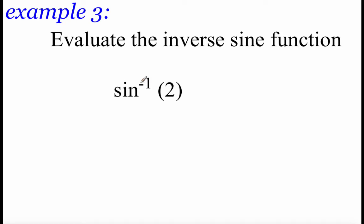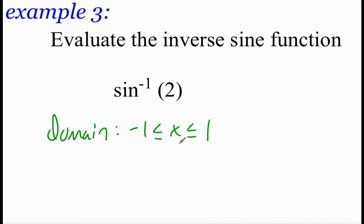Taking a look at example 3, we're doing the inverse sine of 2. We're trying to figure out on our unit circle at what angle is the sine value 2. There's a problem with that — earlier we said the domain was going to be between negative 1 and 1. Well, 2 is outside of that domain, meaning that this does not exist. We can't do this one because 2 doesn't fit in our domain.